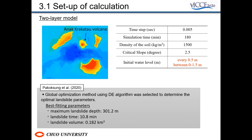I will show the setup of the simulation for the two-layer model. According to the tide gauge measurements, the initial water level at the moment of the eruption was different in each area. Therefore, we changed the initial water level every 0.5 meters between 0 and 1.5 meters in the simulation and validated the fluctuation of the tsunami impact on the coastal areas.